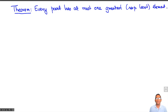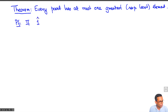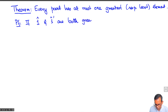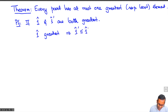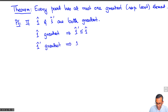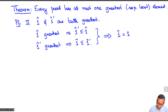It may have none, as we shall see, but it will have at most one, and the proof is very simple. The usual notation for the greatest element of a poset is 1-hat. So suppose 1-hat and 1-hat-prime are both greatest. What does it mean for 1-hat to be greatest? Every element is less than or equal to 1-hat; in particular, 1-hat-prime is less than or equal to 1-hat. And 1-hat-prime being greatest means 1-hat is less than or equal to 1-hat-prime. Together, by anti-symmetry of the partial order, these imply 1-hat equals 1-hat-prime. So the greatest element is unique. Similarly, the least element is unique.